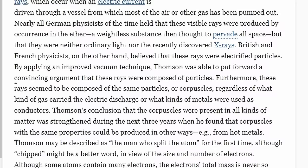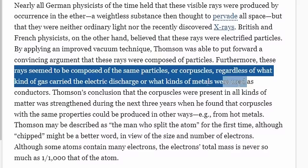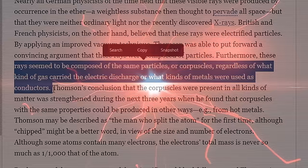These variables showed no effect on the ray's tendency to bend towards the positively charged plate, so Thomson concluded that the rays must have consisted of negatively charged particles that he called corpuscles.